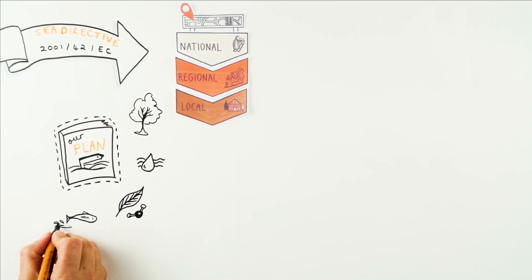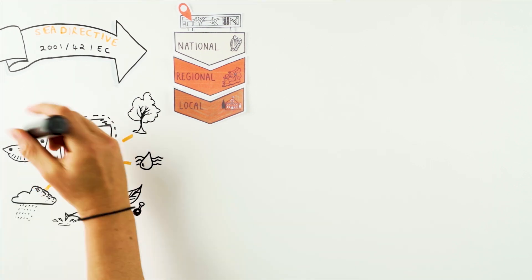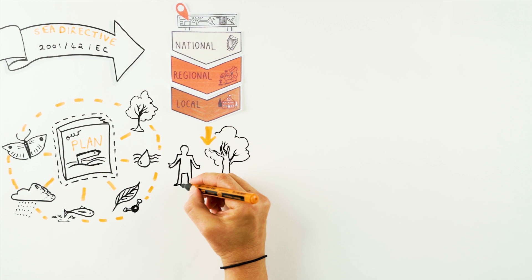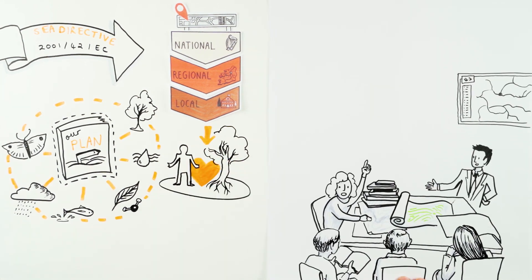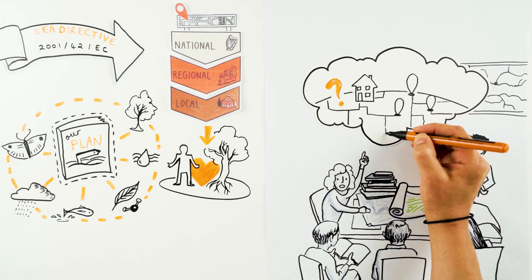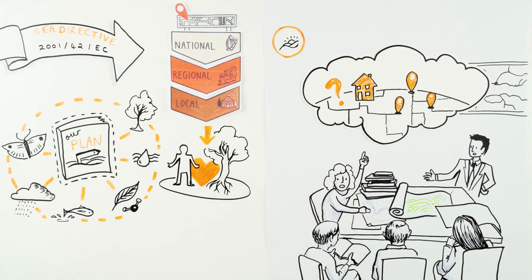The overall goal of SEA is to make sure that future development is sustainable and doesn't impact negatively on our health or the health of our environment. Various types of plans require SEA, and plan makers must consider a broad range of environmental and social aspects as part of the assessment.